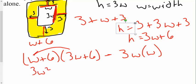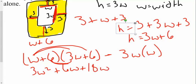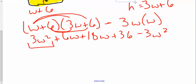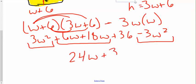Distributing gives me 3w squared plus 6w plus 18w plus 36 minus 3w squared. The 3w squared terms cancel, so combining like terms gives me 6w plus 18w, which is 24w, plus 36. That's as far as I can go. If it ever asks for factored form, you'd factor out the GCF, which is 12, giving 12 times the quantity (2w + 3).